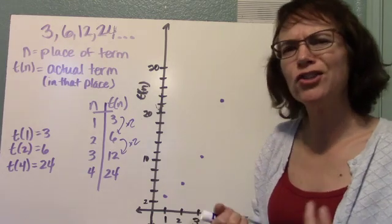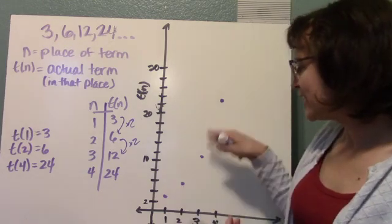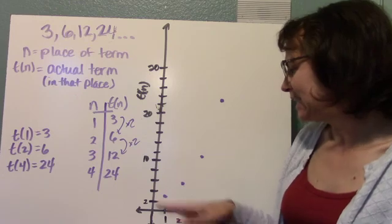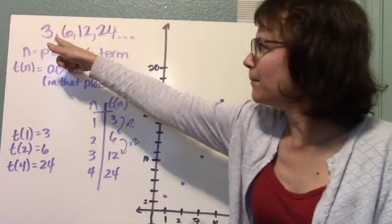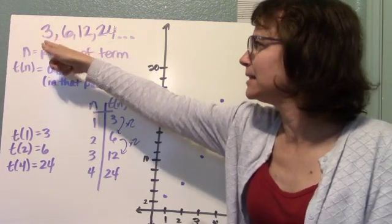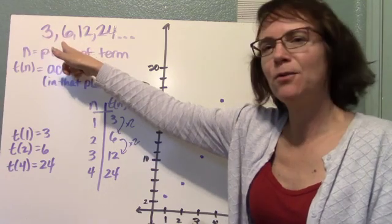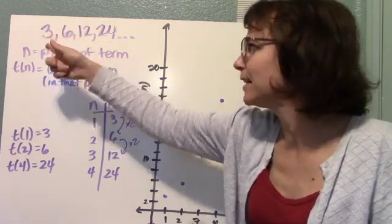Now these sequences are what's called discrete, which means they are dots and not connected. That kind of makes sense if you think about this, because between 3 and 6, when n equals 1 and n equals 2, there's not really an n equals 1 and a half.